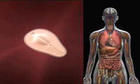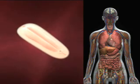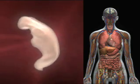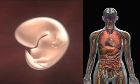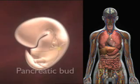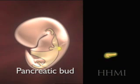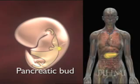To give one more detailed example, let's think about the development of the endoderm — in this case, the formation of the pancreas. There's the pancreatic bud, which comes out of the endodermal derivative.